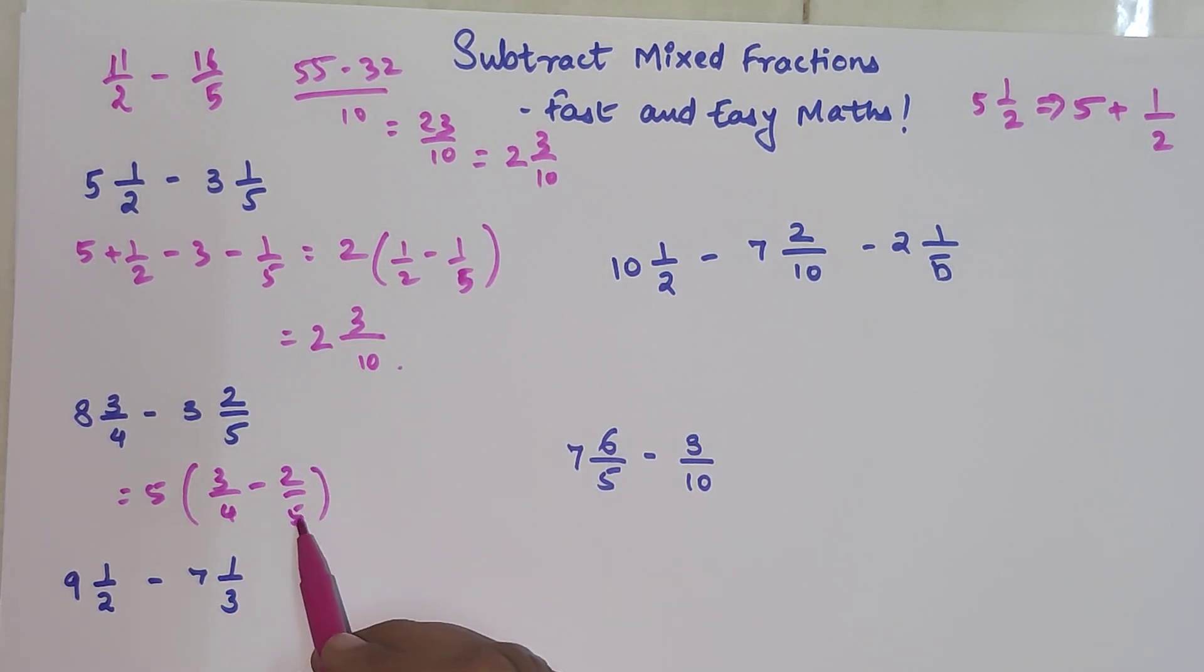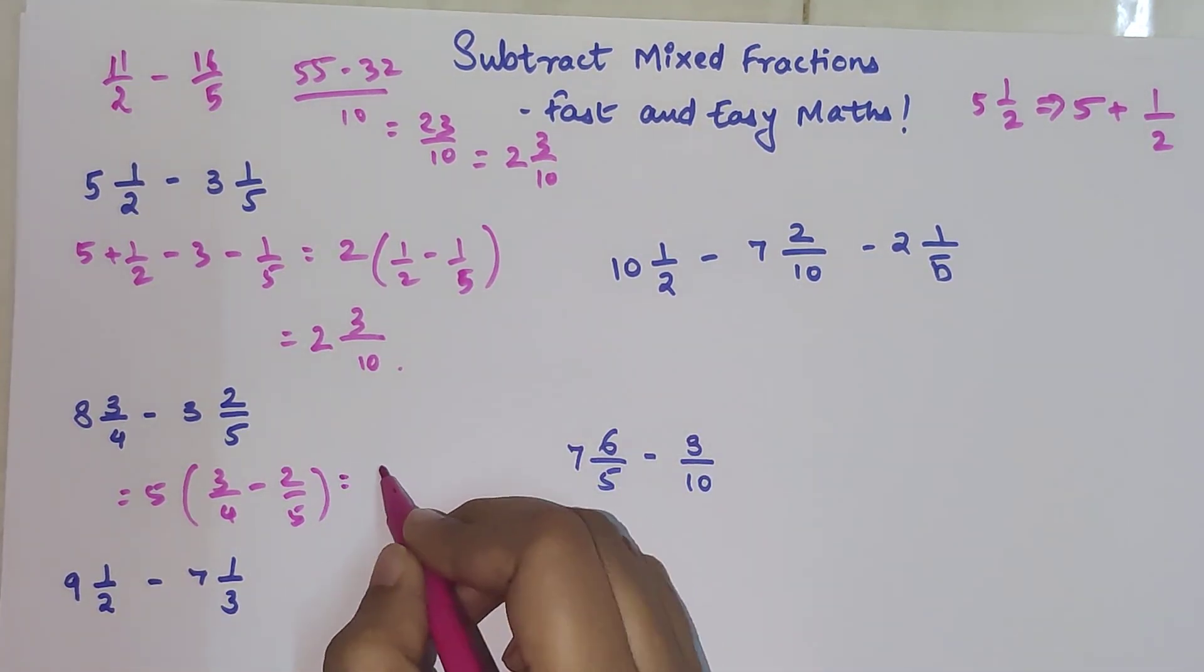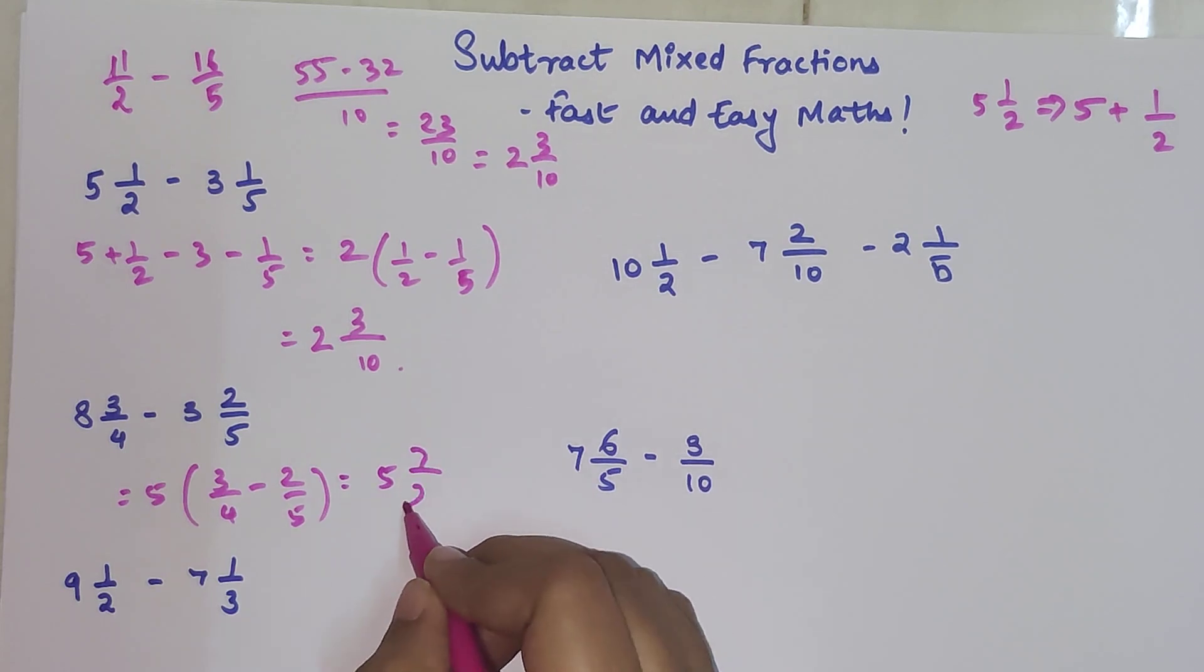Now again, 4 and 5, 5 being prime, we will just directly cross multiply. So 15 and 4 into 2 is 8. When you subtract 8 from 15 you get 7 divided by 20.